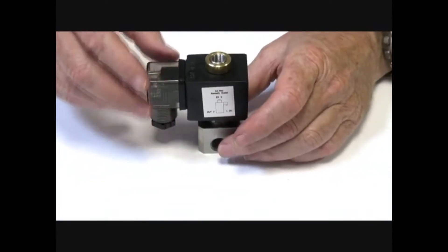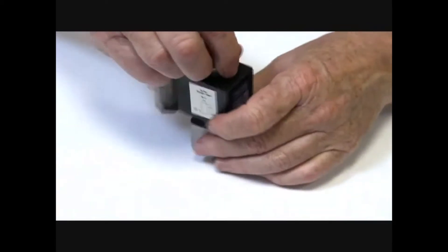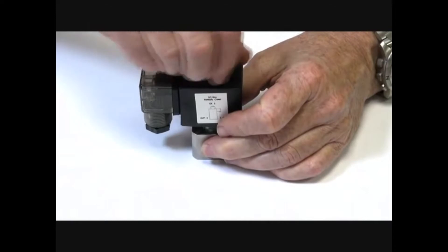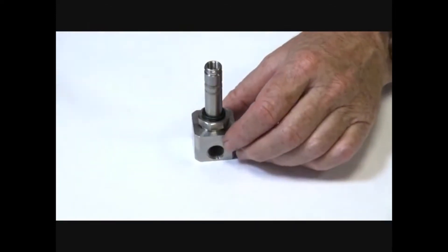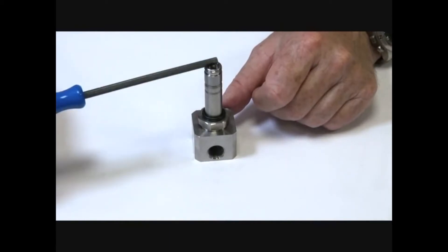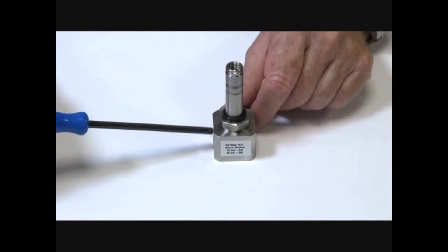Your supply is in port one, out port two, and exhaust port three. When the valve is de-energised, port two is connected to the top exhaust, and port one is the main supply waiting.